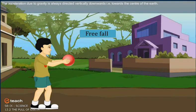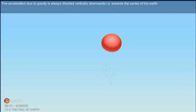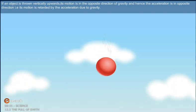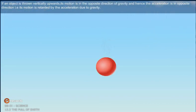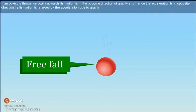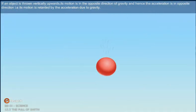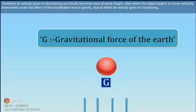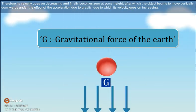The acceleration due to gravity is always directed vertically downwards, i.e., towards the center of the Earth. If an object is thrown vertically upwards, its motion is in the opposite direction of gravity, and hence the acceleration is in the opposite direction — its motion is retarded by acceleration due to gravity. Therefore, its velocity goes on decreasing and finally becomes zero at some height, after which the object begins to move vertically downwards under the effect of acceleration due to gravity, and its velocity goes on increasing.